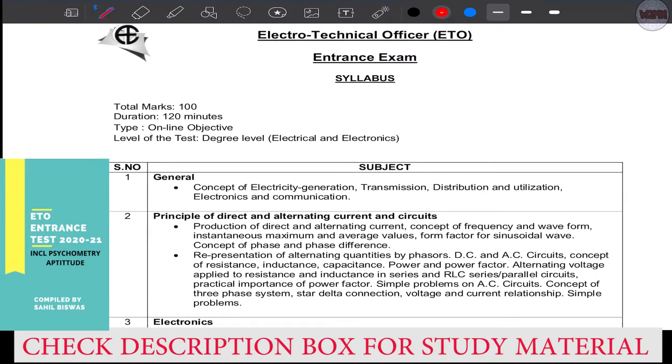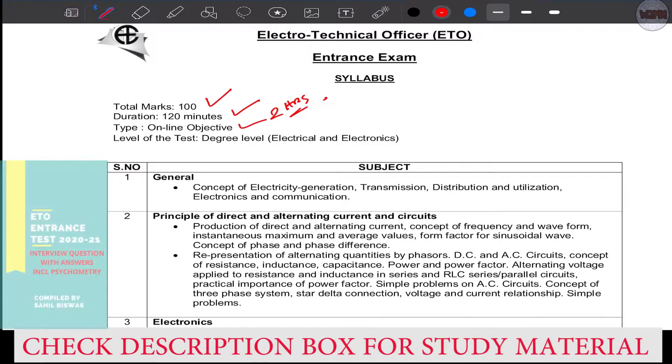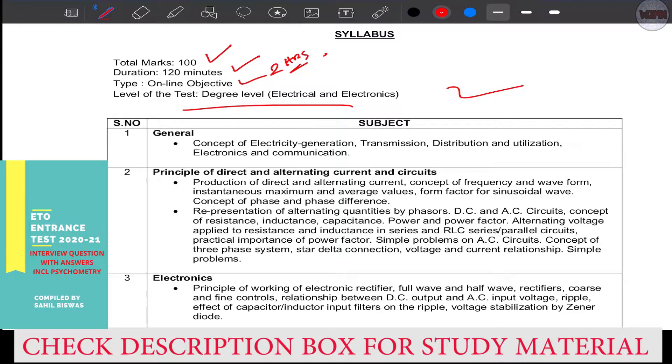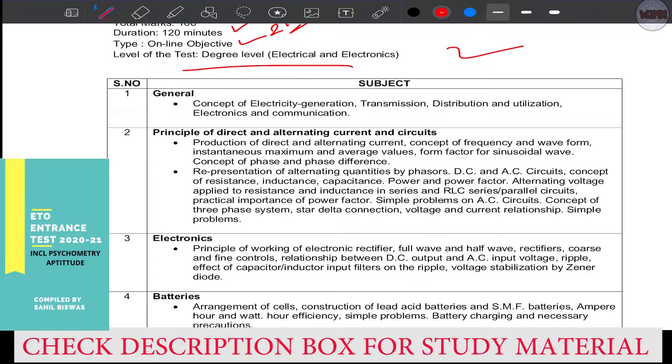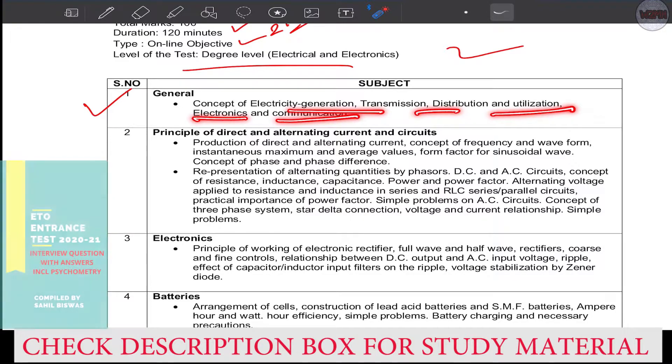As far as Anglo-Eastern is concerned, there will be a hundred marks exam, two hours, online. The level of test is degree level. Now the topics: general concept of electricity generation, transmission, distribution, utilization, electronics, and communication.